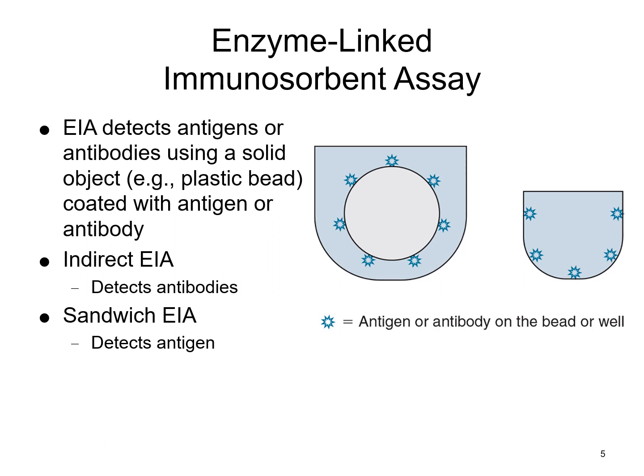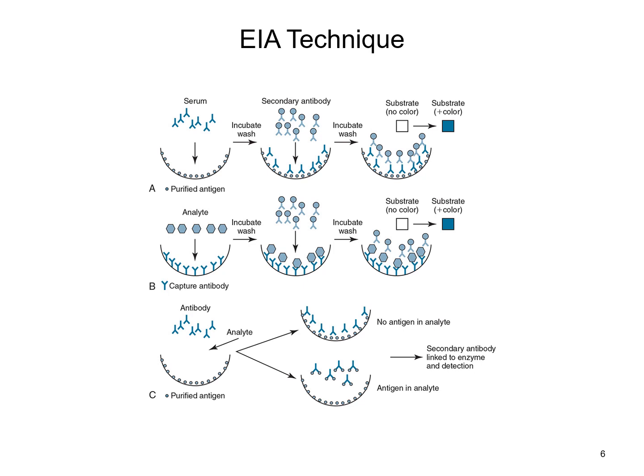One method used is enzyme-linked immunosorbent assay, or EIA, which detects antigens or antibodies using a solid object — for example, a plastic bead coated with an antigen or antibody, or coated inside a well. You have indirect EIA, which detects antibodies present in the sample, and sandwich EIA, which detects antigen present in the sample. Ultimately, what you're looking for is the presence of that antigen or antibody in the sample directed against something specific.